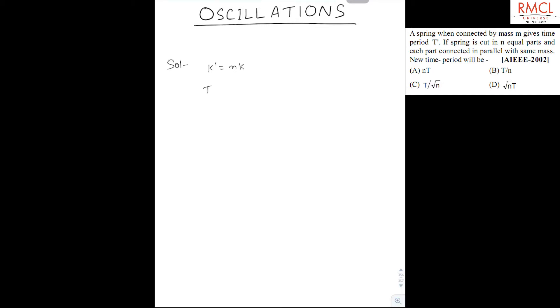So, we know T is proportional to 1 upon under root of K. So T' will be equal to 1 upon, it is proportional to under root of NK. So T' will be equal to T upon under root of N.